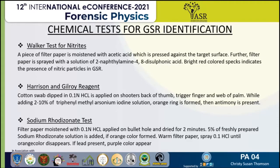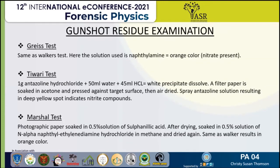Now the sodium rhodizonate test. A filter paper or photographic paper is pressed over the bullet hole after being moistened with 0.1 N HCl. It is then dried using a hot air blower, and carefully coated with a saturated sodium rhodizonate solution in water. After that, the filter paper takes on an orange color from the sodium rhodizonate, and the filter paper is warmed again but not dried completely.